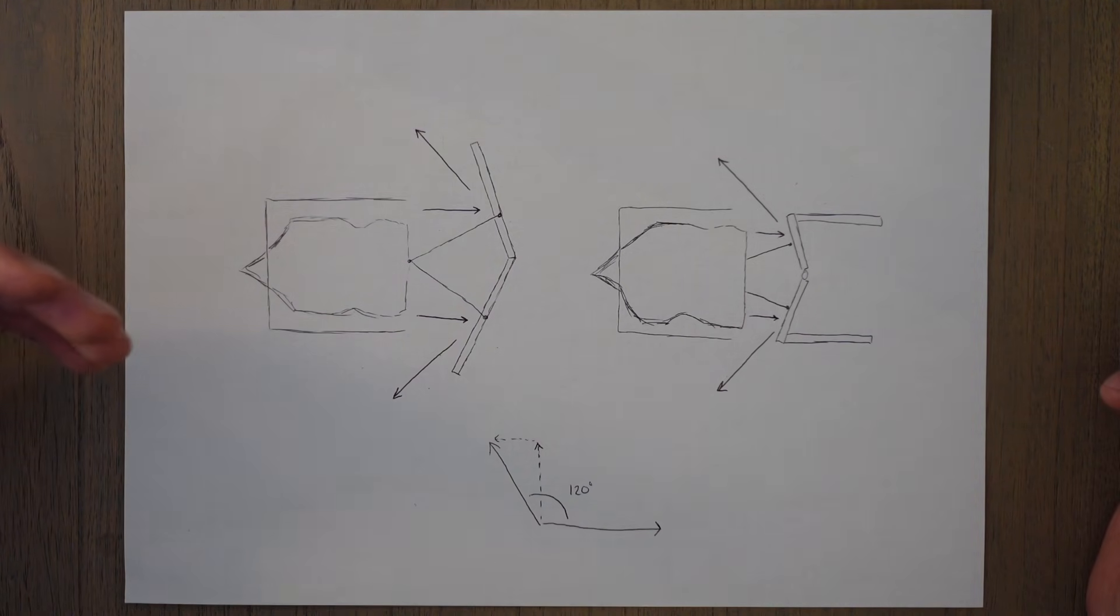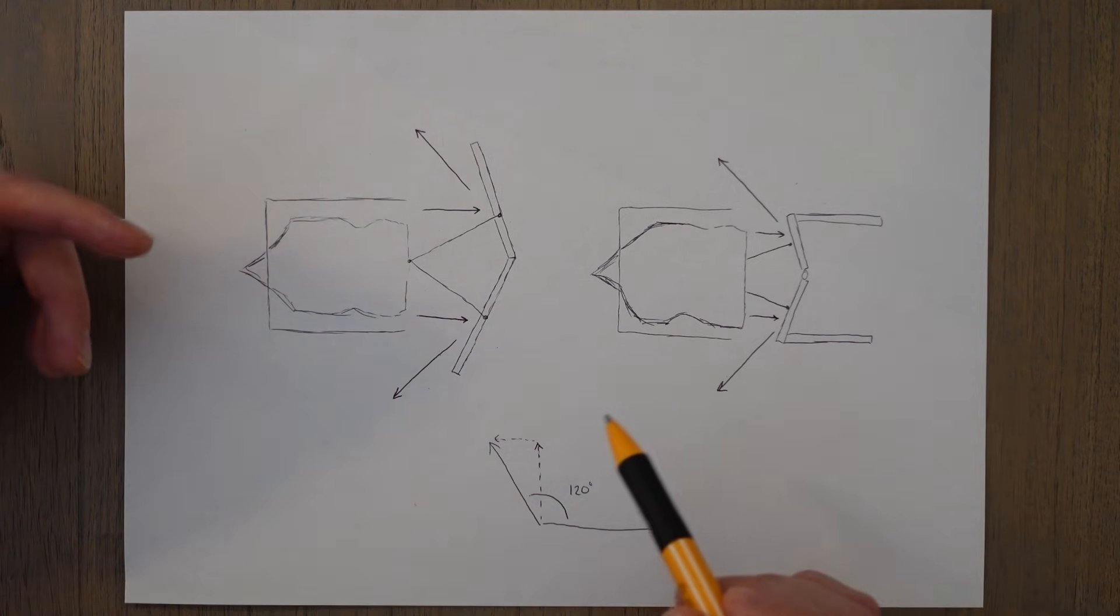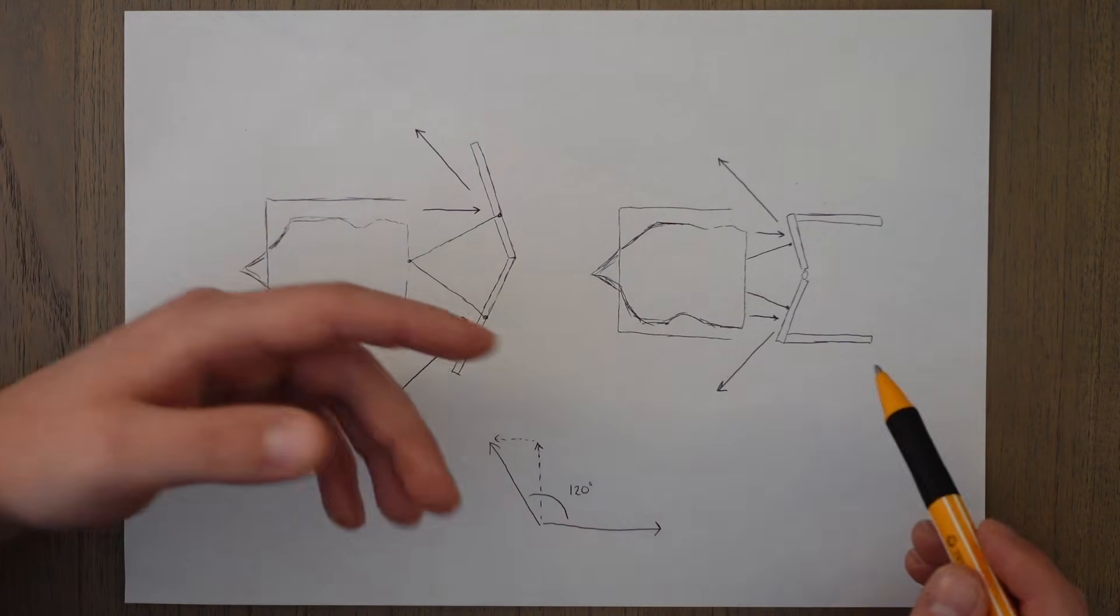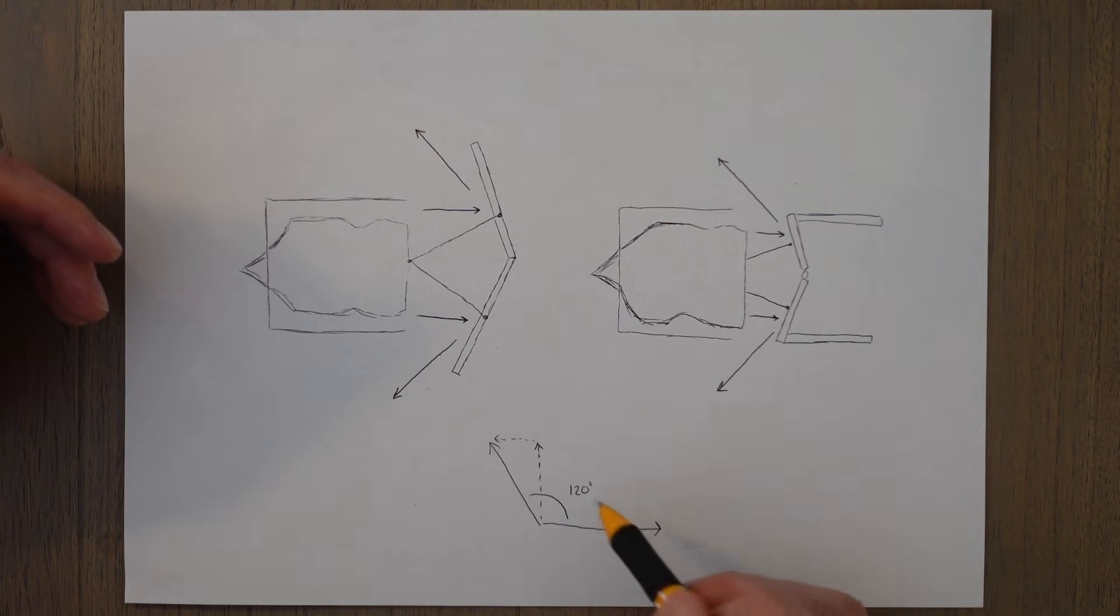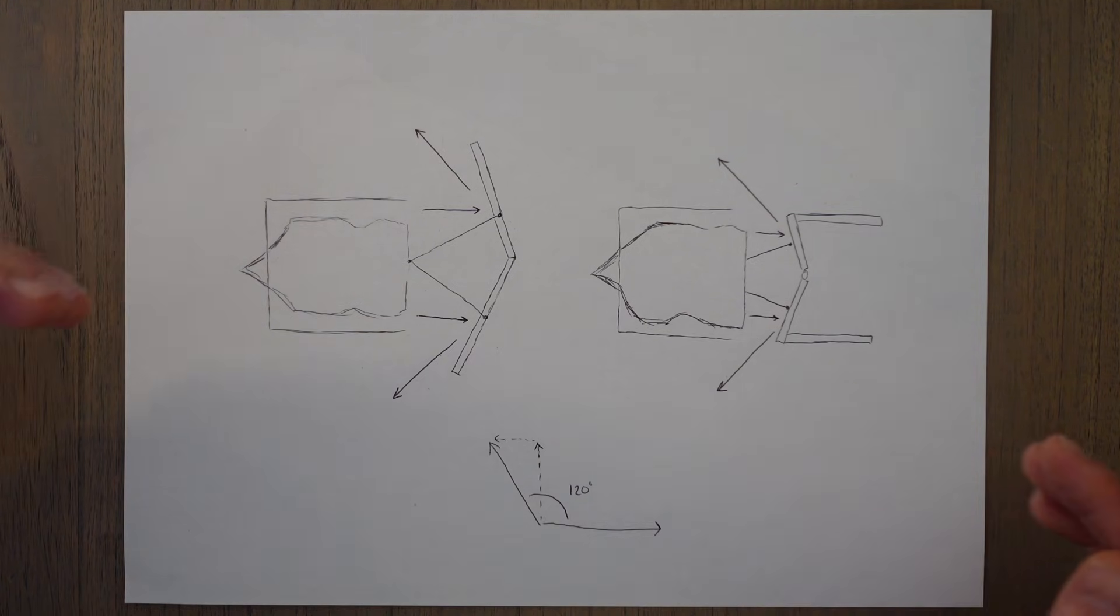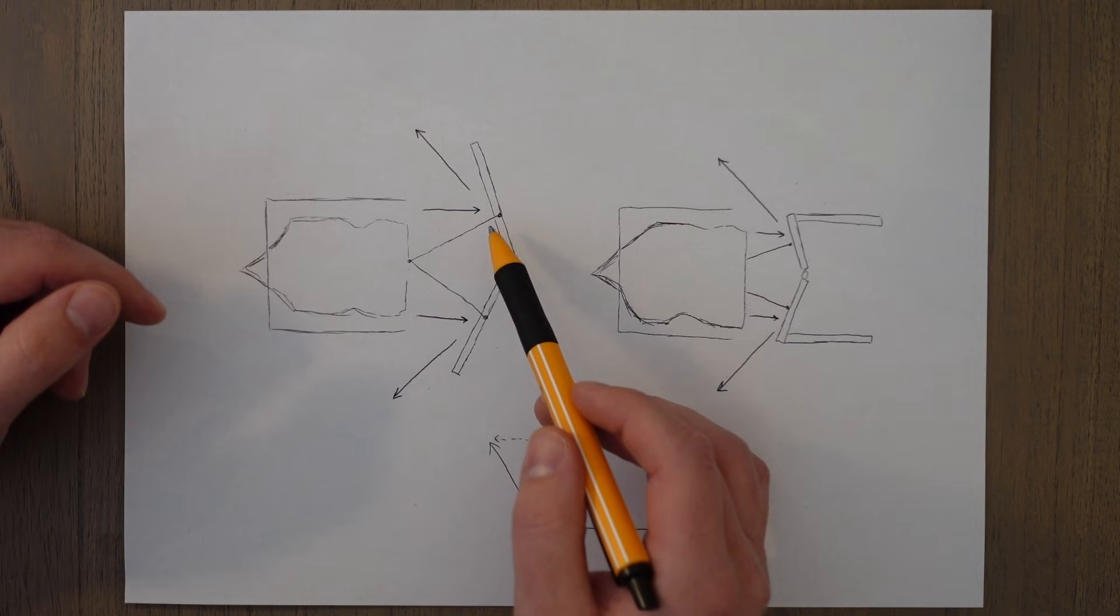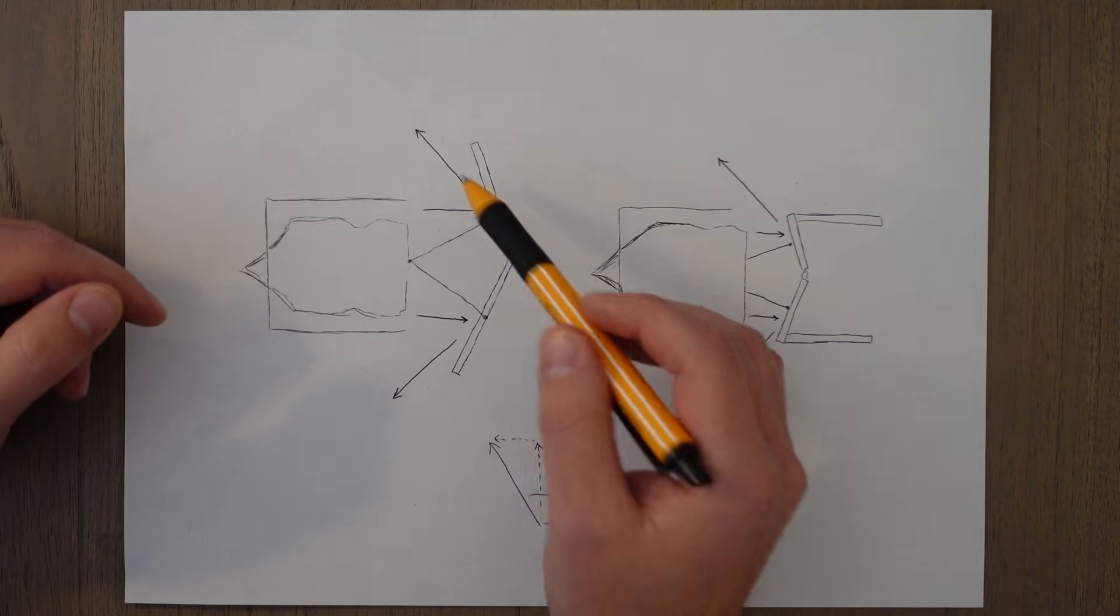The way the system of reverse thrust and redirecting the gases works is done by using bucket doors or clamshells, and this allows for a large change in angle of around 120 degrees simply by blocking off the airflow and changing the direction it flows.